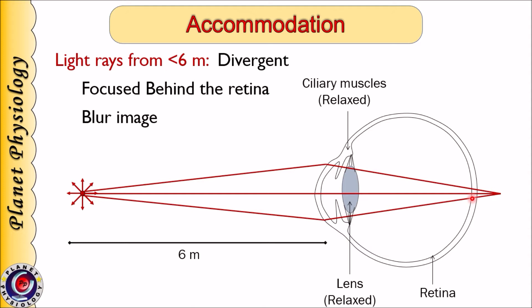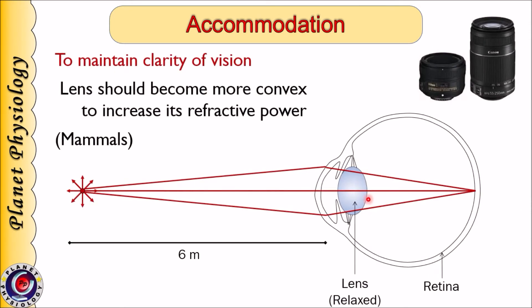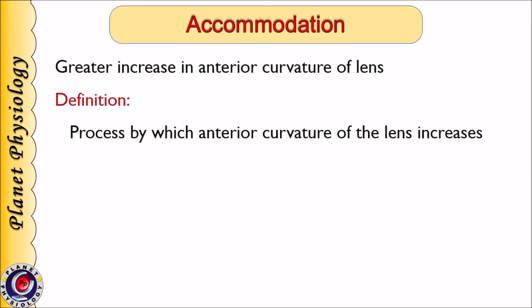The relaxed eye will focus these diverging rays behind the retina, so the image of that near object formed on the retina will be blurred. To form a clear image of a nearer object, either the distance between lens and retina should increase — similar to lens adjustment of a camera — or the lens should become more convex to increase its refractive power. Mammals have adopted this second mechanism. This increase in the convexity of the lens is achieved mainly by increasing the anterior curvature of the lens, and the process by which it is achieved is called accommodation.